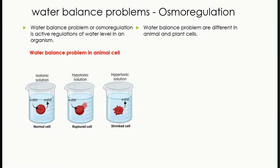In a hypertonic solution, outside the cell there is high solute concentration while low water potential. The water molecules present inside the cell will start moving outside to maintain the water potential, and as water moves out, the cell will start shrinking. So in summary: for animal cells, isotonic solution gives a normal cell, hypotonic solution gives a ruptured cell, and hypertonic solution gives a shrunken cell.